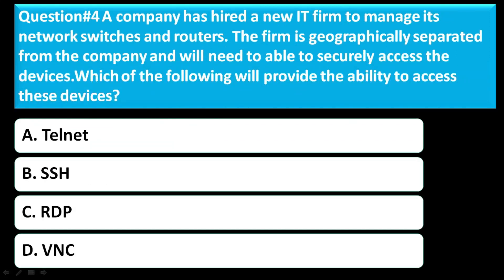Question 4: A company has hired a new IT firm to manage its network switches and routers. The firm is geographically separated from the company and will need to be able to securely access the devices. Which of the following will provide the ability to access the devices? Option A: Telnet. Option B: SSH. Option C: RDP. Option D: VNC. The correct answer is B — SSH.